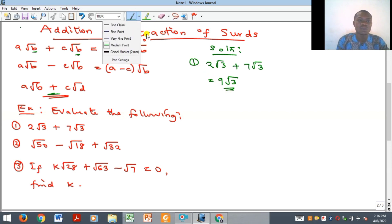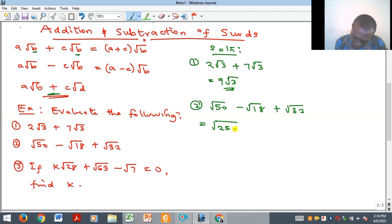And what about the next one? The next example says we should simplify √50 minus √18 plus the √32. So what do we do there? This is going to give us √(25×2). And then this is going to give us √(9×2). And this is going to give us √(16×2).